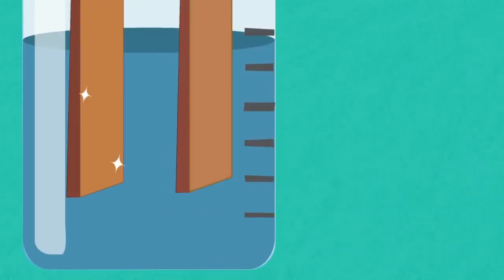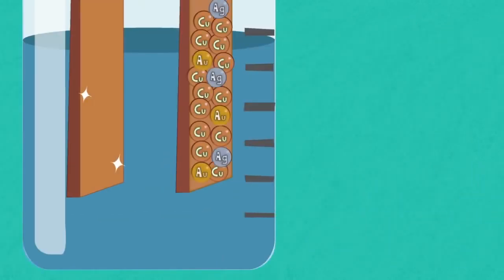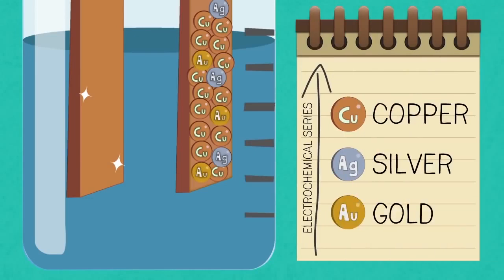Any metal you find in the impure anode which is below copper in the electrochemical series doesn't go into solution as ions. It stays as a metal and falls to the bottom of the cell as an anode sludge, together with any unreactive material left over from the ore.